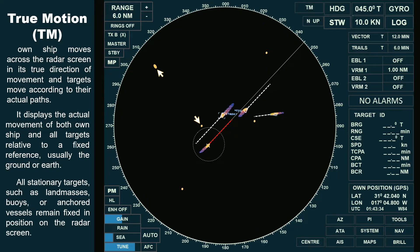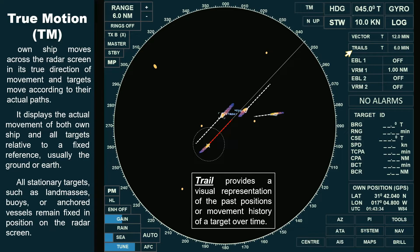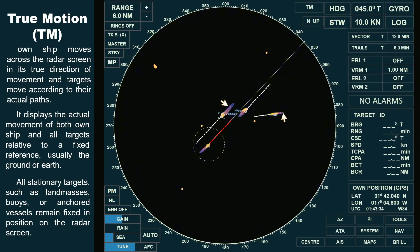In this radar display, the trail function is switched on and set to a six-minute time frame. A trail provides a visual representation of the past positions or movement history of a target over time. In true motion mode, with the trail set to true, all moving objects will leave a trail behind, appearing as faint lines or tails that show where the target has been. This includes the trail of the own ship, as well as other moving objects. Stationary objects, including anchored vessels, will not have a trail in true motion mode, because they are not moving relative to the ground.